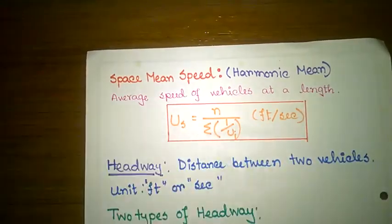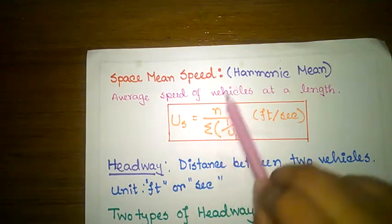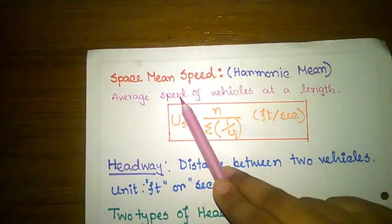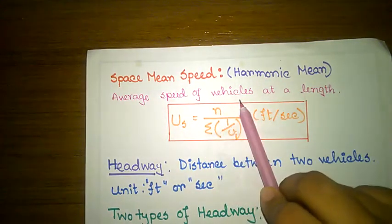Space-mean speed refers to the average speed of vehicles over a stretch of road. It is the harmonic mean of the speeds of vehicles.